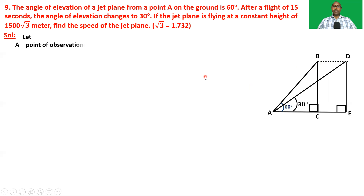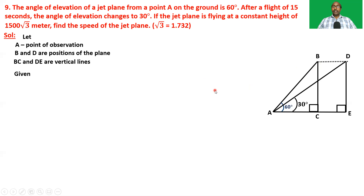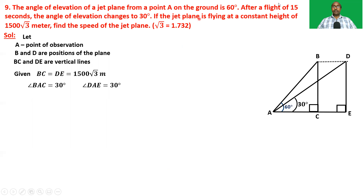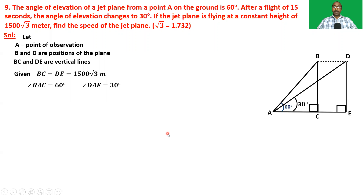Let A be the point of observation; B and D are positions of the plane. BC and DE are vertical lines. The measurements are BC equals DE equals 1500√3 meters. Angle BAC equals 60 degrees and angle DAE equals 30 degrees.